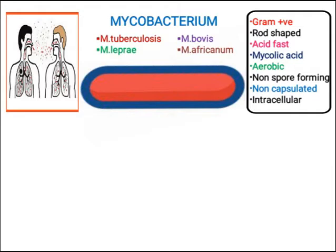Another important example is Mycobacterium africanum. As the name suggests, this species is found mainly in African regions and causes TB in Africa. Its symptoms are the same as Mycobacterium tuberculosis but are slightly different in some ways.